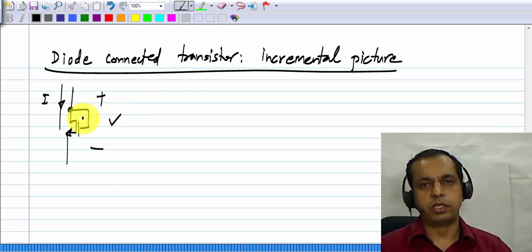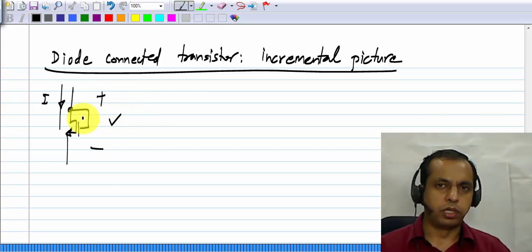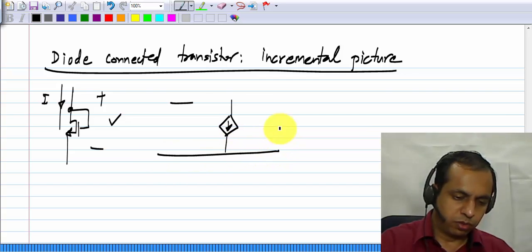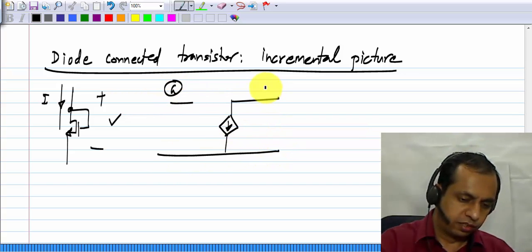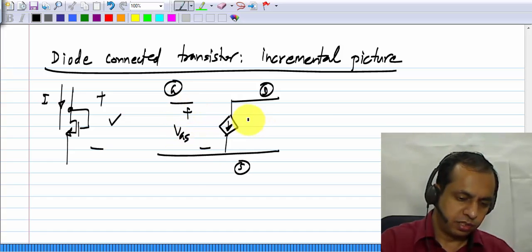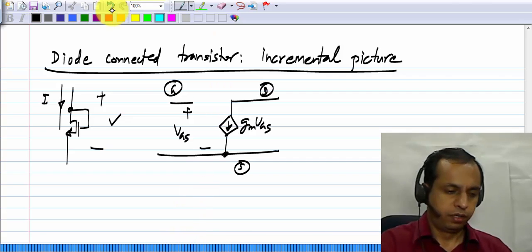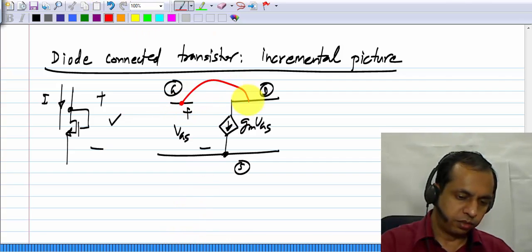It will have certain operating point I and V, and around that operating point, what will we have? If you write it in terms of the small signal model of the MOS transistor, this is the gate, drain, and source. This is V G S, and this is G M V G S, and the gate is connected to the drain.